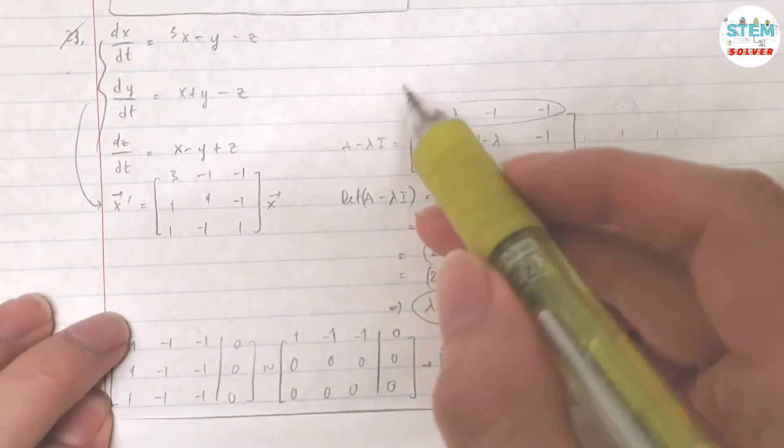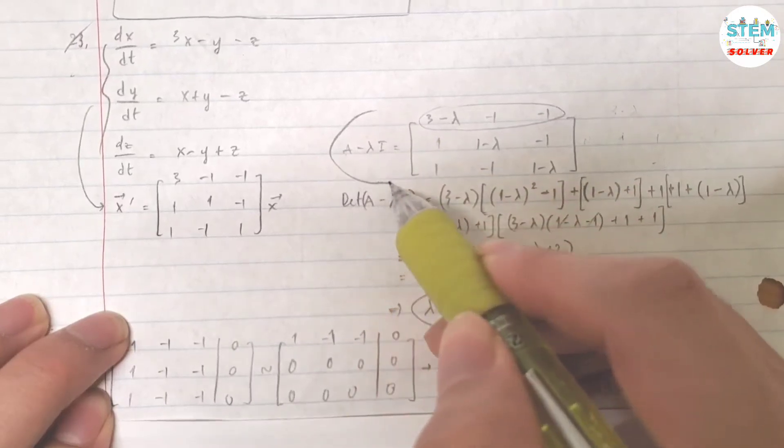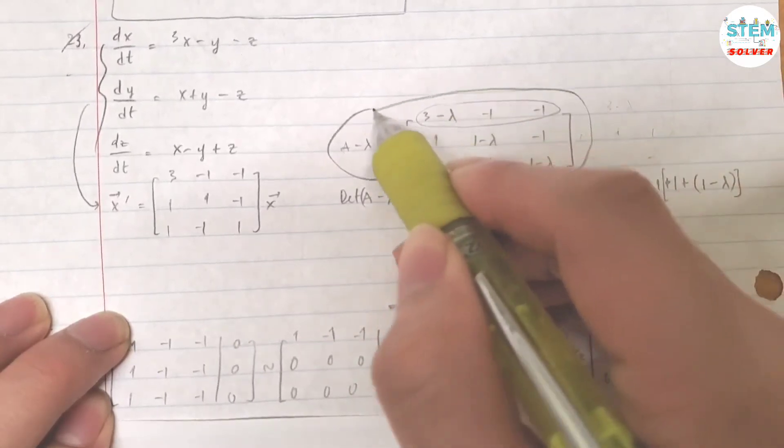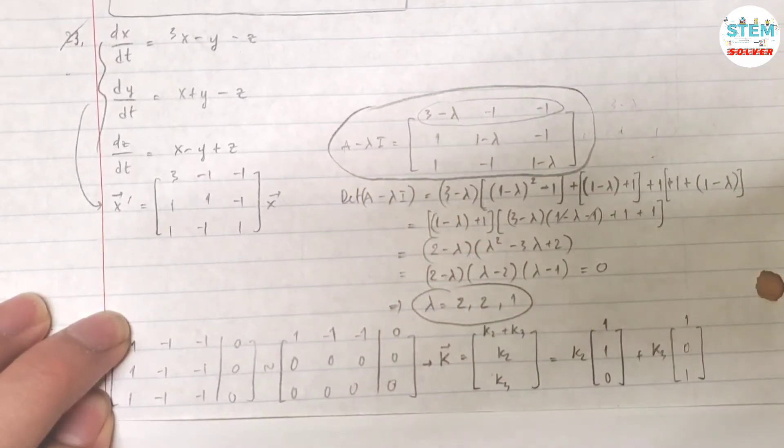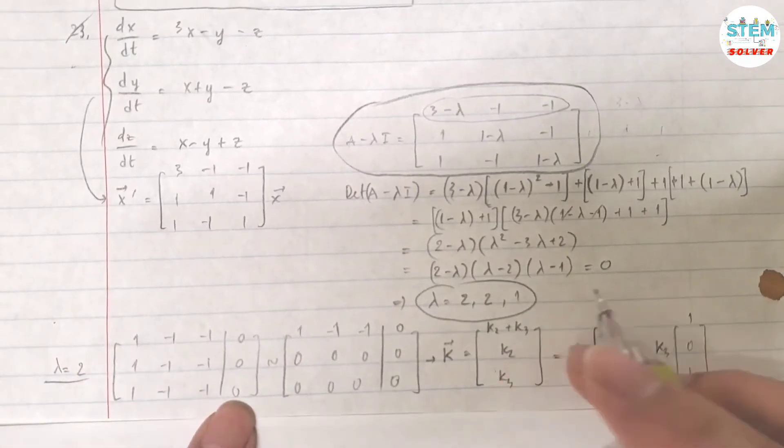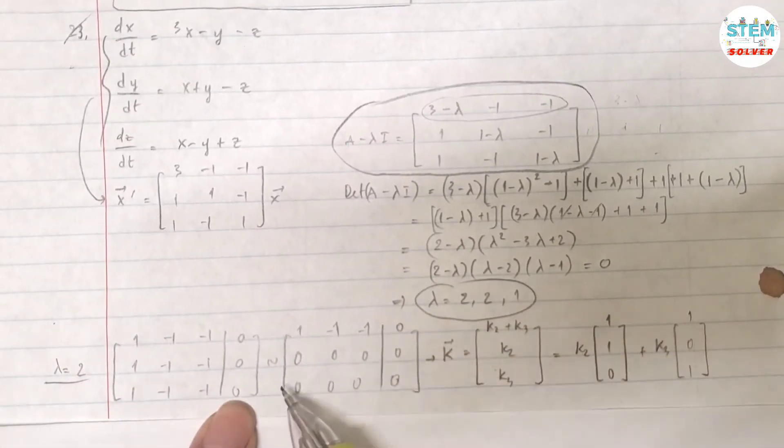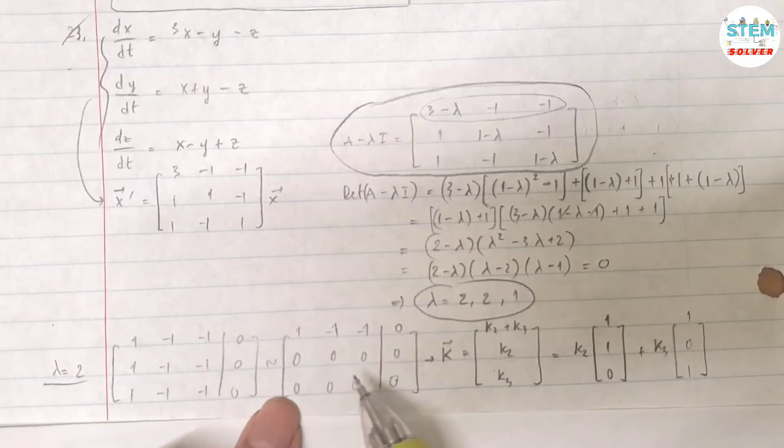So you have, plug this, plug lambda equals into this matrix. You have this matrix, then augmented with 0. If I reduce this down to base matrix I will get this.